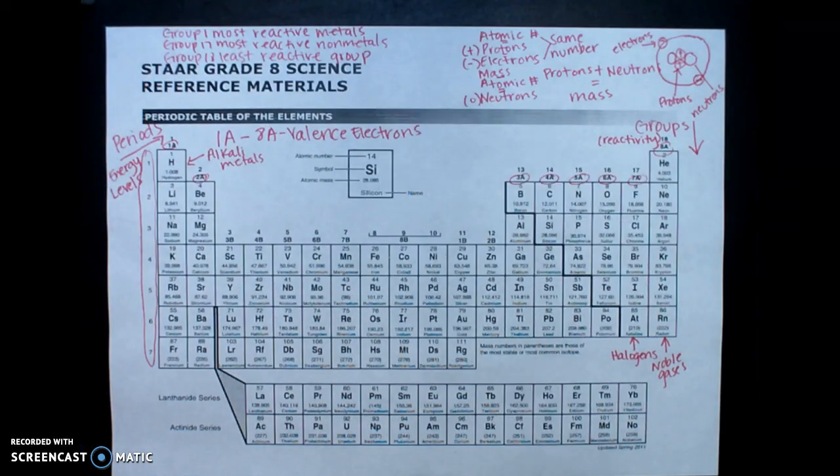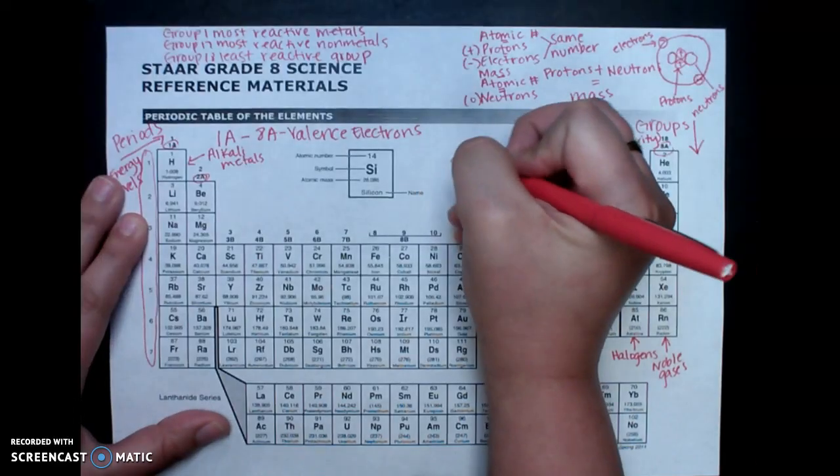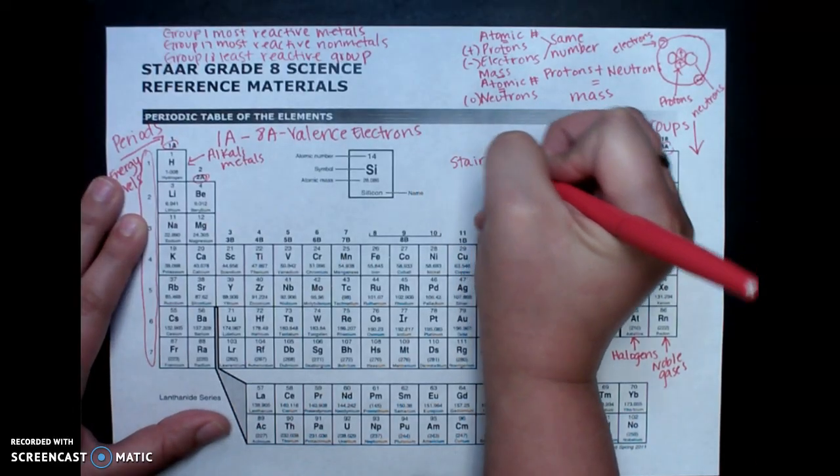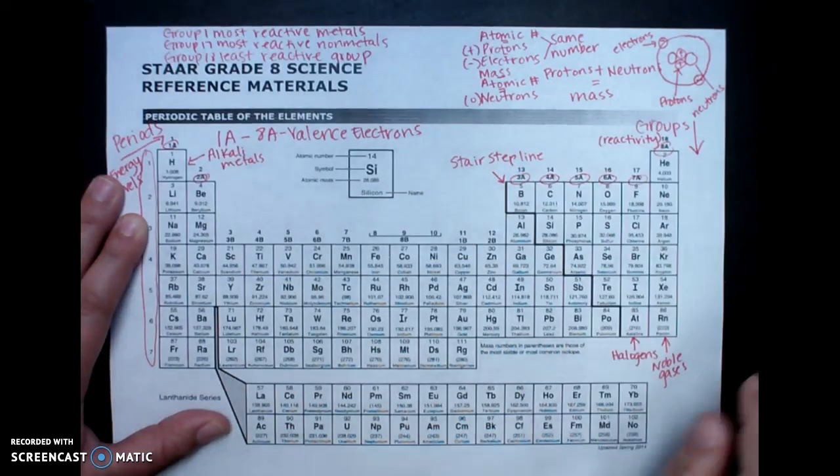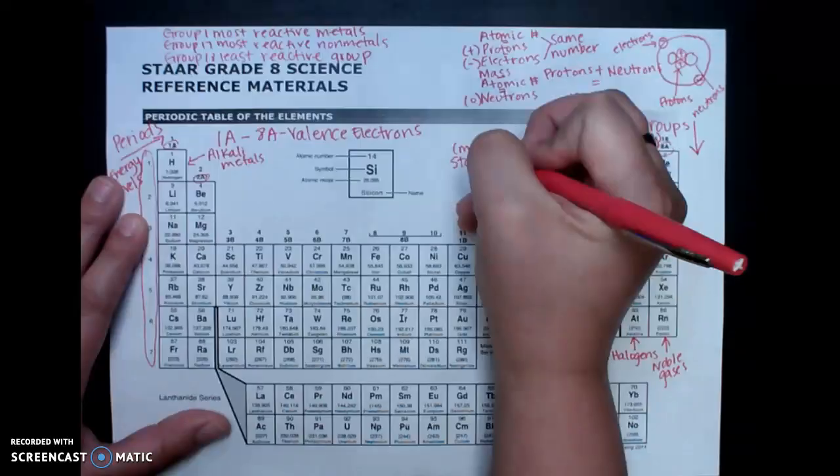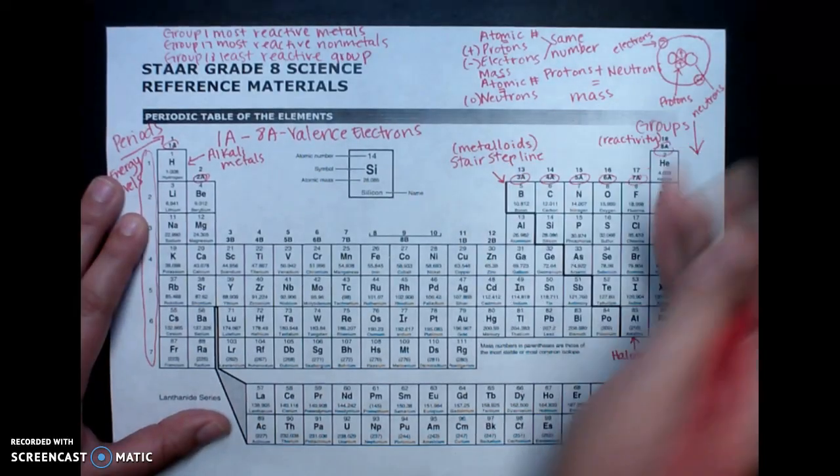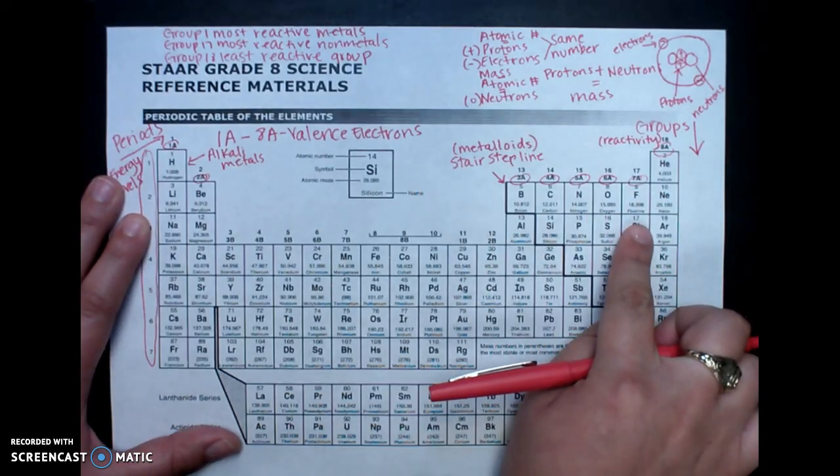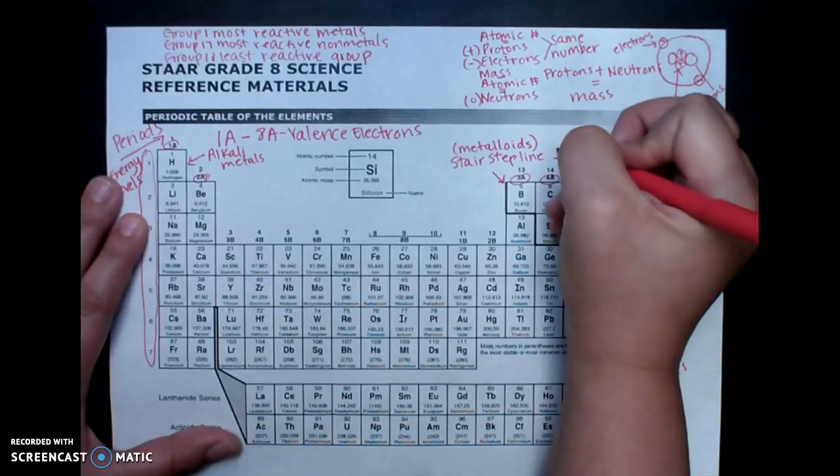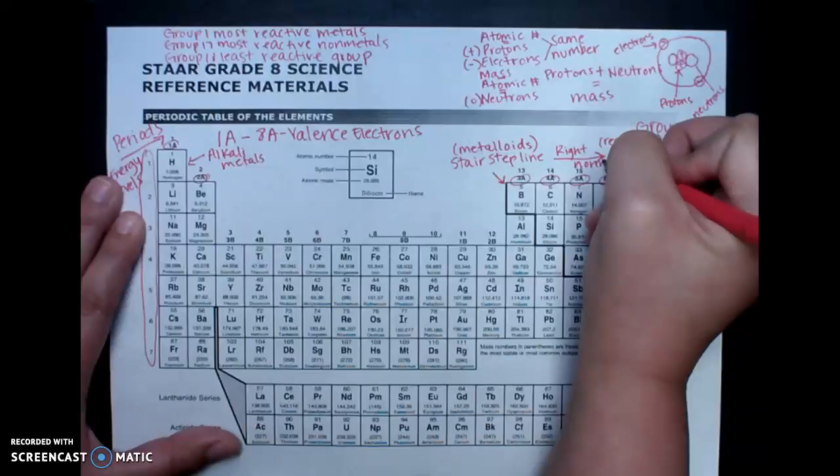Okay? So the final thing that we need to do is distinguish between metals, nonmetals, and metalloids. Now, the way that we do this is by using the stair-step line. And our stair-step line is what separates our metals and nonmetals. It also tells us where our metalloids are. And these metalloids have properties of both metals and nonmetals. So the first one, to the right of the stair-step line, we have our nonmetals. So I'll put right. Nonmetals.